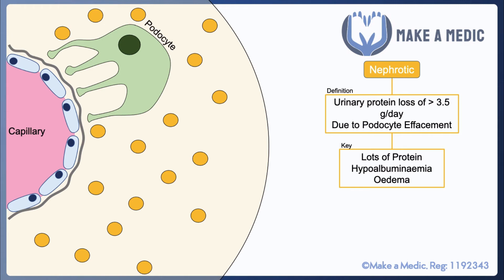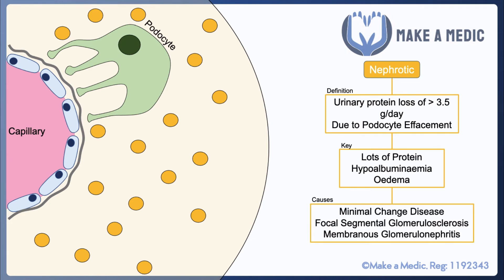Nephrotic syndrome tends to be described as a triad of proteinuria, hypoalbuminemia, and edema, and it can almost be thought of more as a sequence than a triad because one leads to the other. It's also important to remember that nephrotic and nephritic syndromes aren't necessarily two distinct clinical entities — they can be somewhat of a spectrum in between.